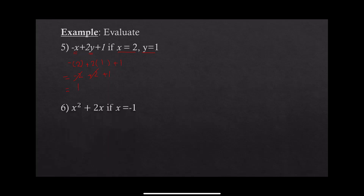Example 6: x squared plus 2x, at x equals negative 1. This is another reason to use brackets when substituting. Replace x with a bracket but keep the square — the only thing to replace is x; if there is a square or any other exponent, write it as it is. Plus 2 times another bracket. Replace both brackets with negative 1.